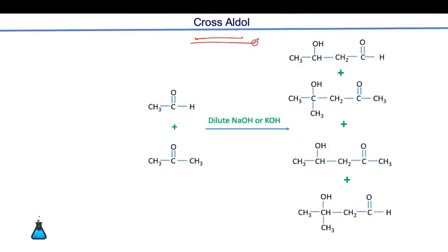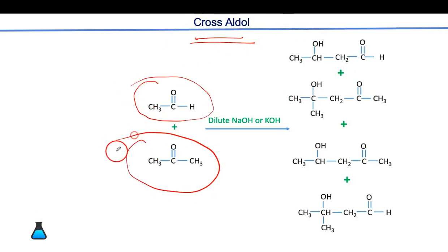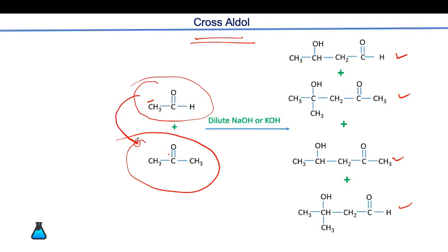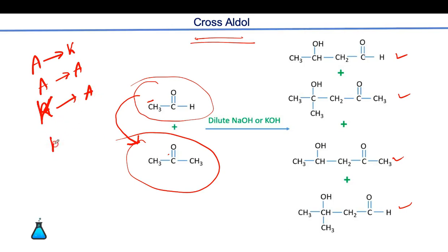In cross aldol condensation, if you take two different carbonyl compounds — one aldehyde and one ketone — there is a possibility of forming four products. Aldehyde as nucleophile can attack aldehyde, or attack ketone. Ketone as nucleophile can attack aldehyde, or attack ketone. These four combinations give four different products.